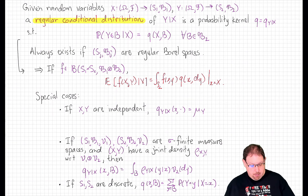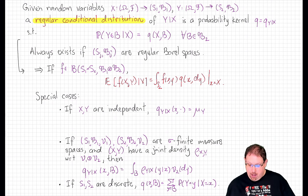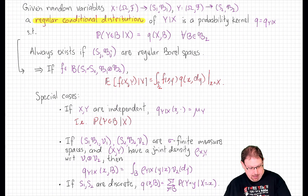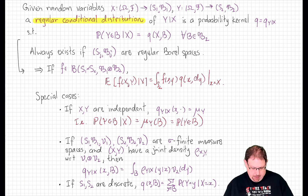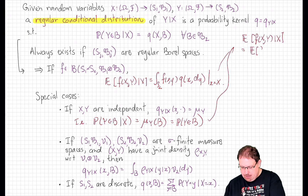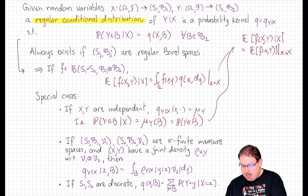Here are some special cases. If the two random variables X and Y are independent, we would hope that the regular conditional distribution of Y given X shouldn't depend on X — and that is in fact what happens. If X and Y are independent, then the regular conditional distribution of Y given X is just the law of Y for each fixed x. In other words, the probability that Y is in B given X doesn't depend on X and is almost surely equal to the constant probability that Y is in B. Together with the product rule, this means the conditional expectation of f at XY given X is just the expectation of f at constant x and Y — but only in the case that X and Y are independent.